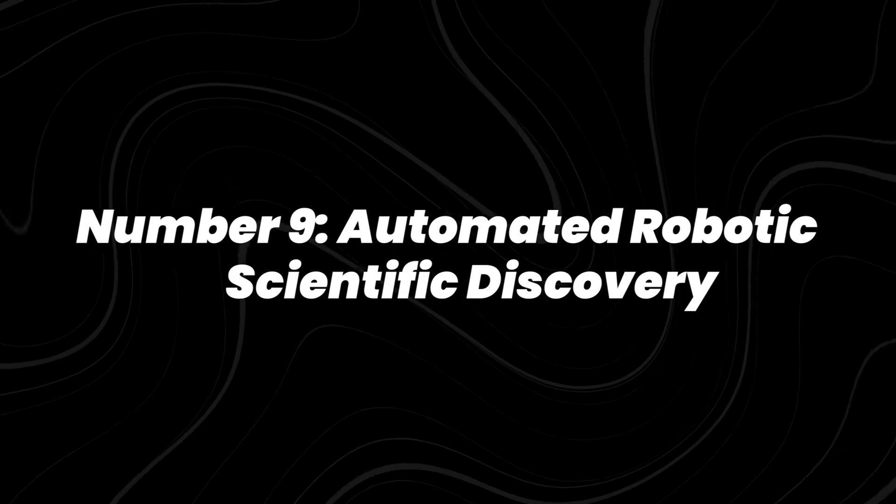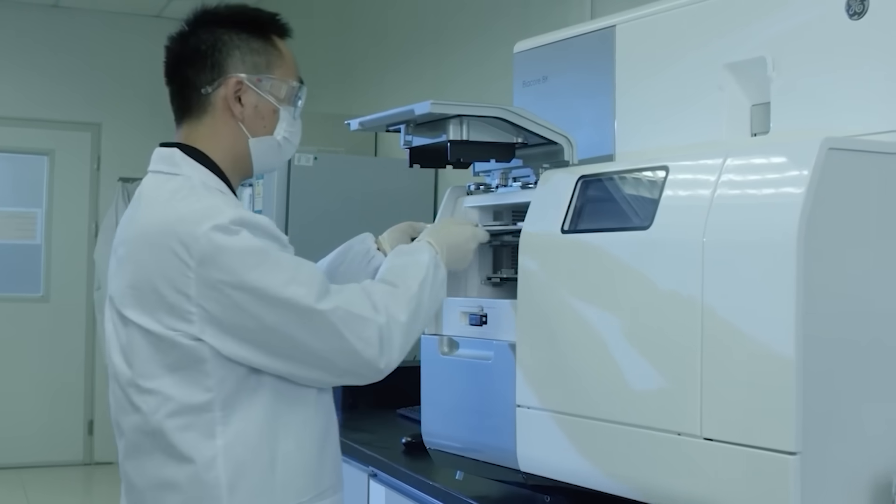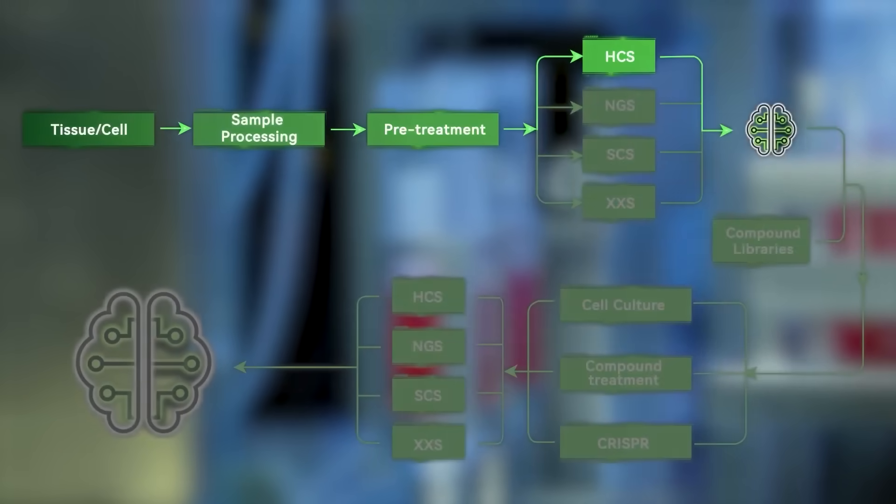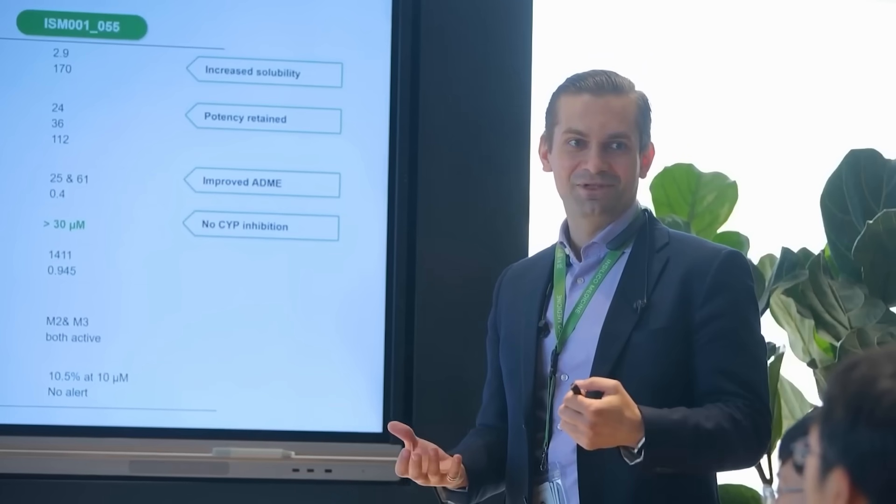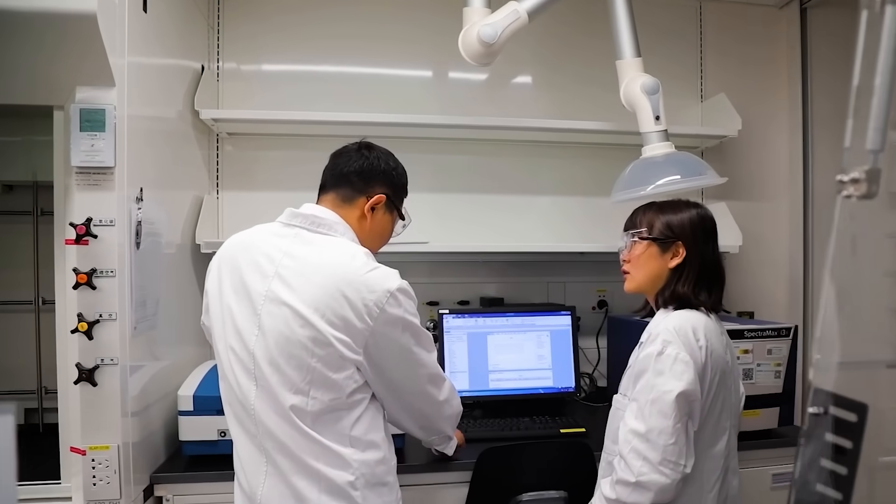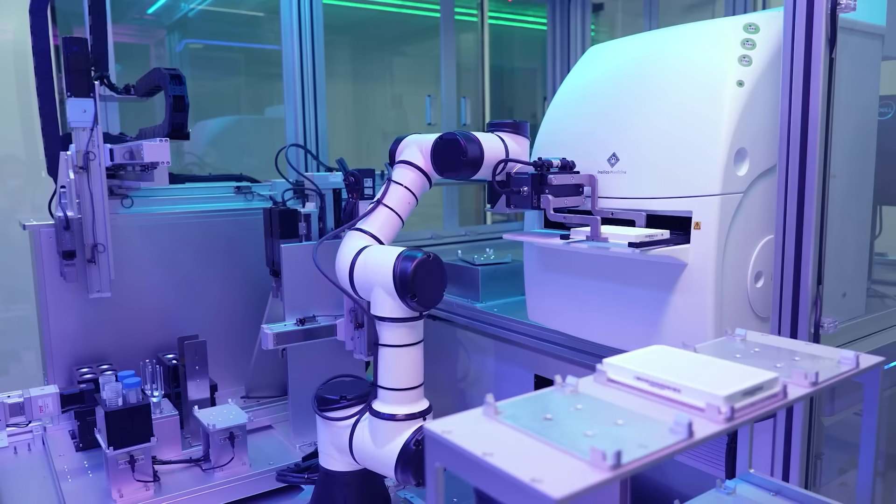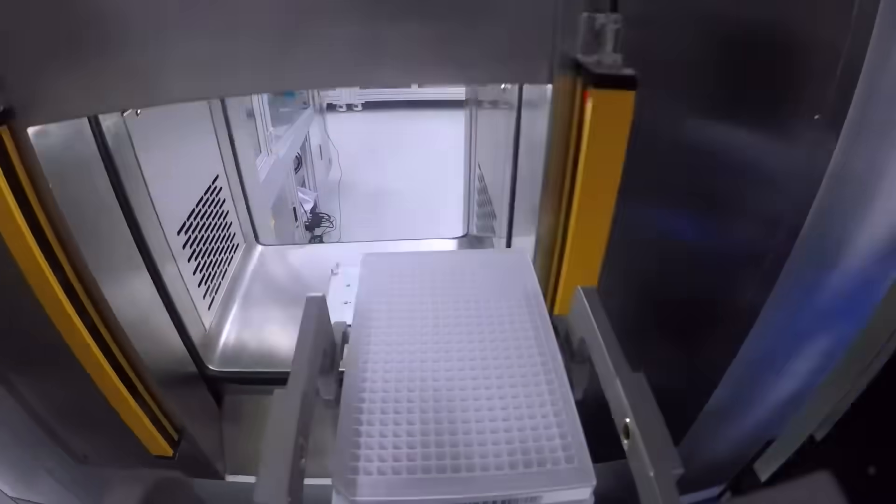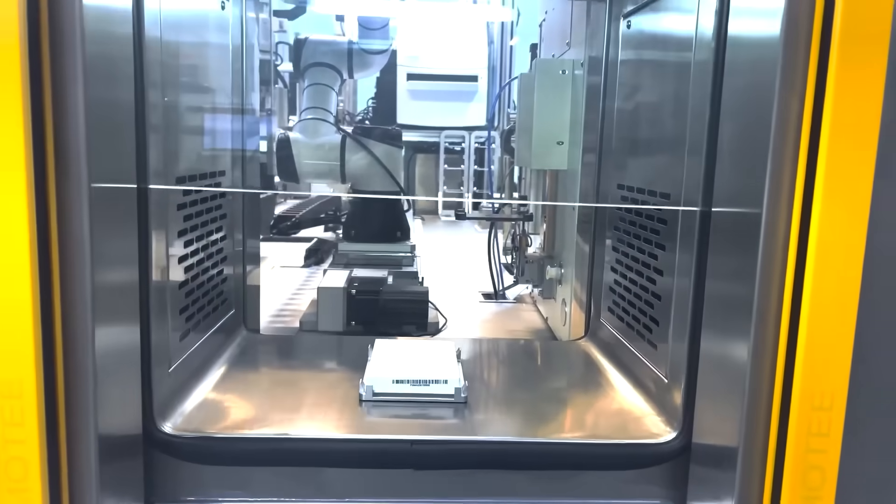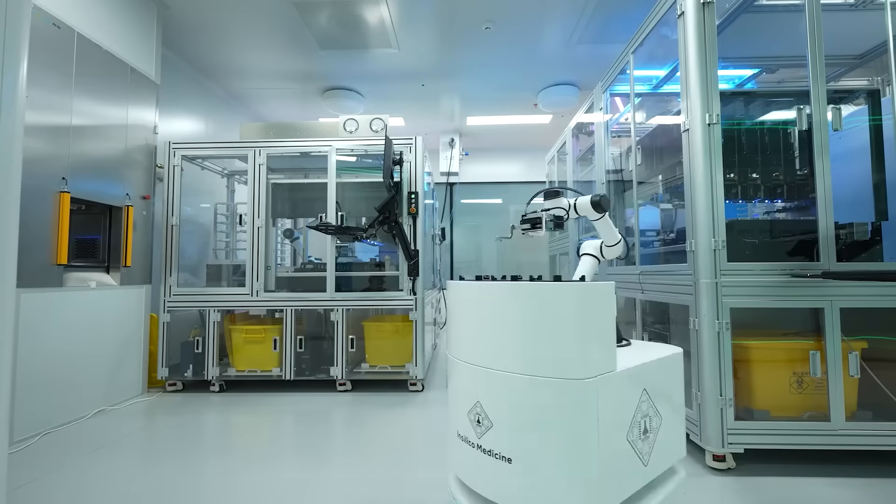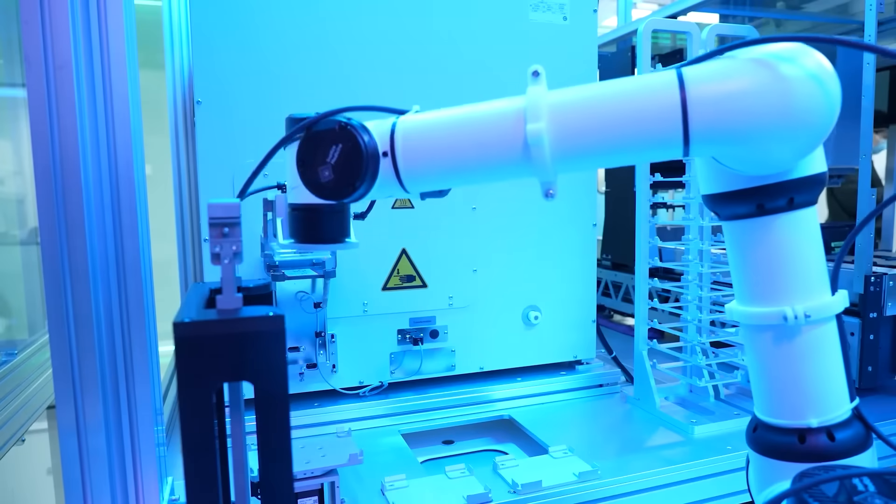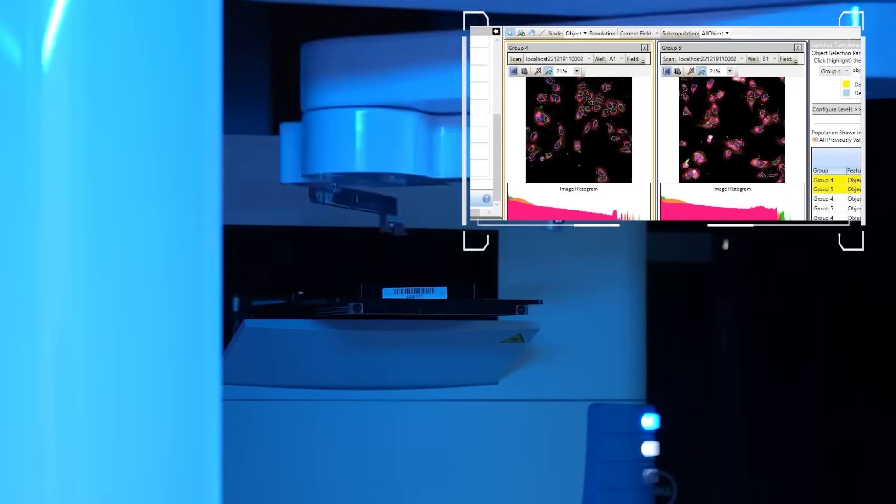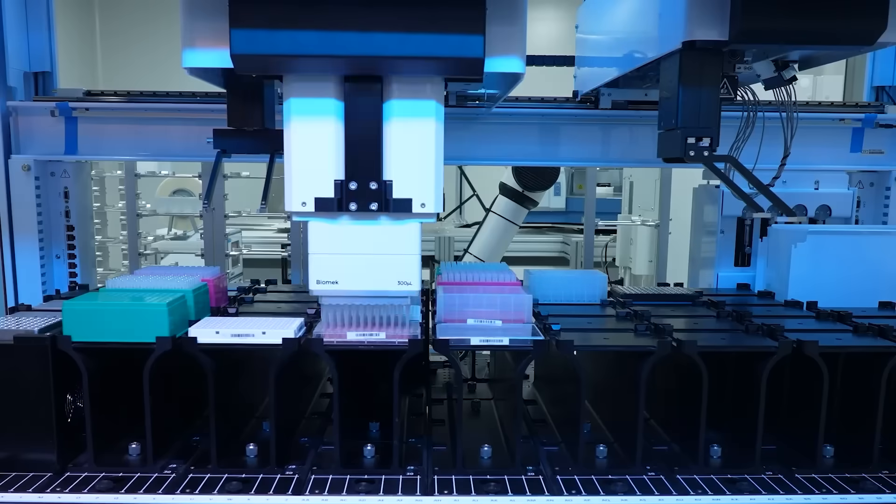Number 9, Automated Robotic Scientific Discovery. Science often moves slowly, but AI-powered robots are changing that pace. In 2023, researchers at the University of Liverpool demonstrated an autonomous robot scientist that ran experiments around the clock, testing hypotheses, analyzing results, and deciding its next steps without human input. Unlike traditional labs that shut down overnight, these systems can operate continuously, accelerating discovery cycles.